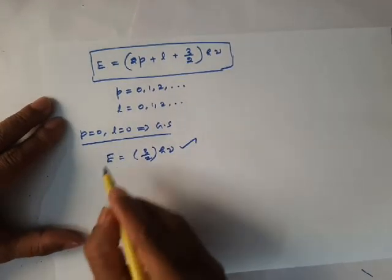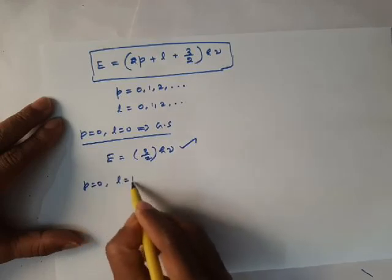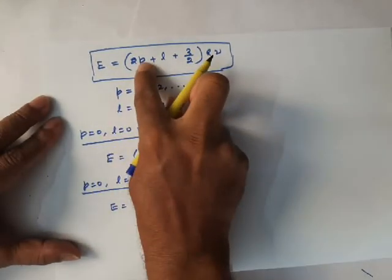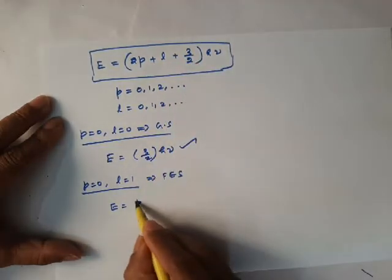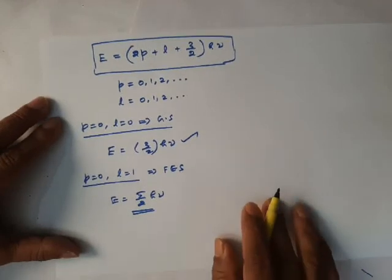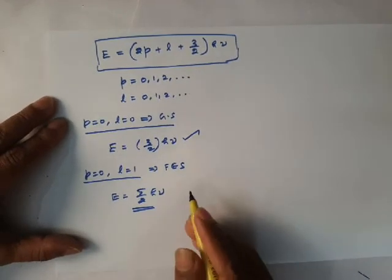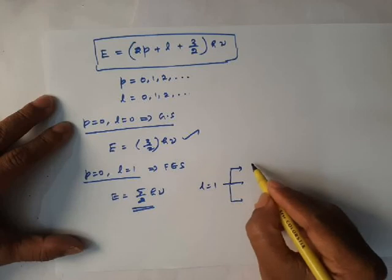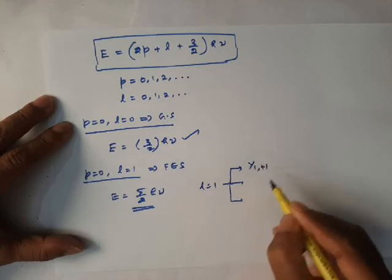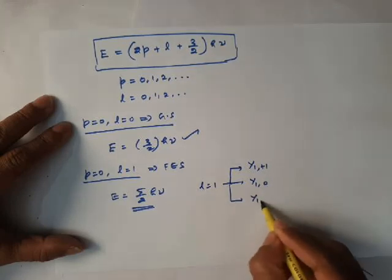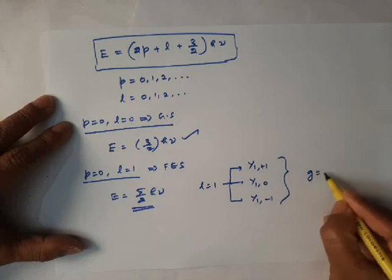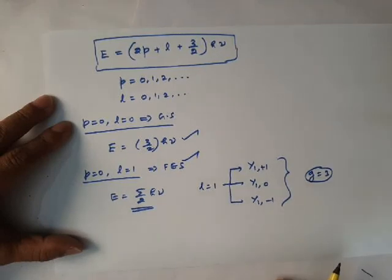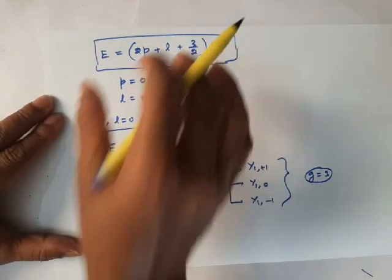For the first excited state, take p = 0 and L = 1. Substituting, the energy is (0 + 1 + 3/2)hν = 5/2 hν. The degeneracy: when L = 1, there are three possible states — (L=1, M=+1), (L=1, M=0), and (L=1, M=−1) — so the degeneracy of the first excited state is 3. You get the same answer as in Cartesian coordinates, but the energy expression is different — that is important.